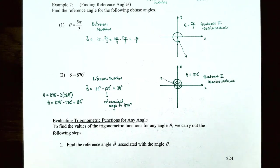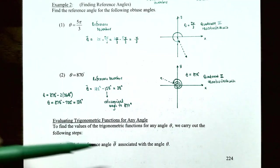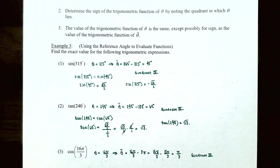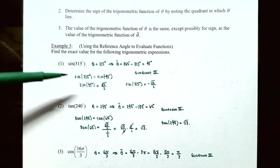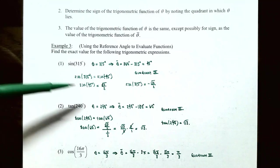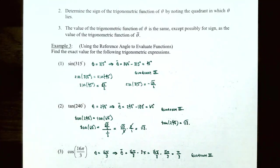To evaluate trig functions for any angle theta: step 1, find the reference angle θ̄; step 2, determine the sign by noting the quadrant; step 3, the value of the trig function of theta equals the value of the trig function of θ̄, with the appropriate sign. Example 3, number 1: sine(315°). Since theta lies in quadrant four, θ̄ = 360° − 315° = 45°. Sine of 45° is √2/2, and since y is negative in quadrant four, sine(315°) = −√2/2.